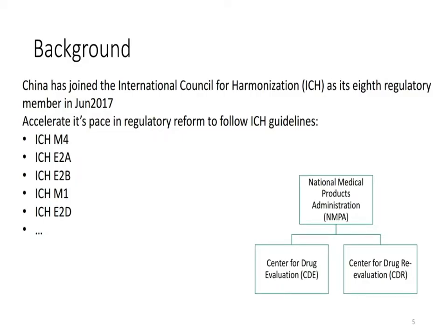China joined ICH as its eighth regulatory member in June 2017. In order to accelerate the pace of regulatory reform, China's regulatory authority will need to follow the following ICH tier guidelines, including ICH M4, E2A, E2B, M1, and E2D.